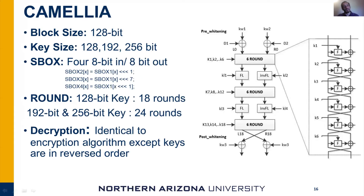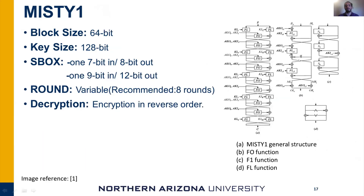Camellia is a 128-bit block cipher with three different key sizes. It uses four S-boxes where S-box 2, 3, and 4 can be implemented using S-box 1. MISTY1 is a 64-bit block cipher with a fixed 128-bit key. It uses two S-boxes and has a variable number of rounds where the eight-round version is recommended.